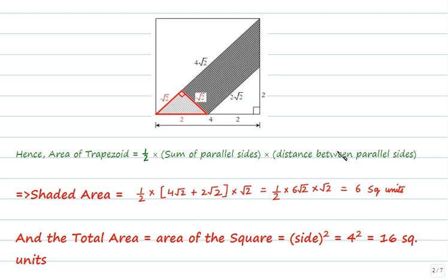Total area is equal to area of the square which is equal to side squared. Hence total area is equal to 4² = 16 square units.